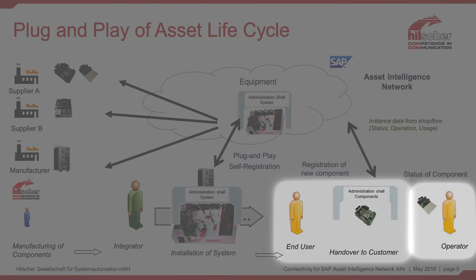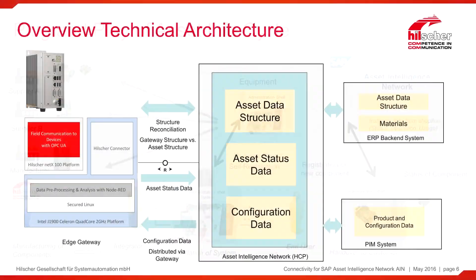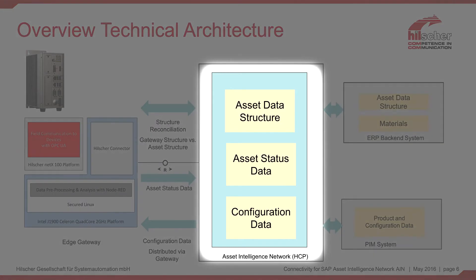The third example is the operator who would like to see continuous actual data of all the production equipment. Let's have a look at the technical architecture of such a solution. The SAP Asset Intelligence Network holds the virtual representation of the plant equipment — that is the SAP Asset Data, the SAP Asset Status, and the configuration data.